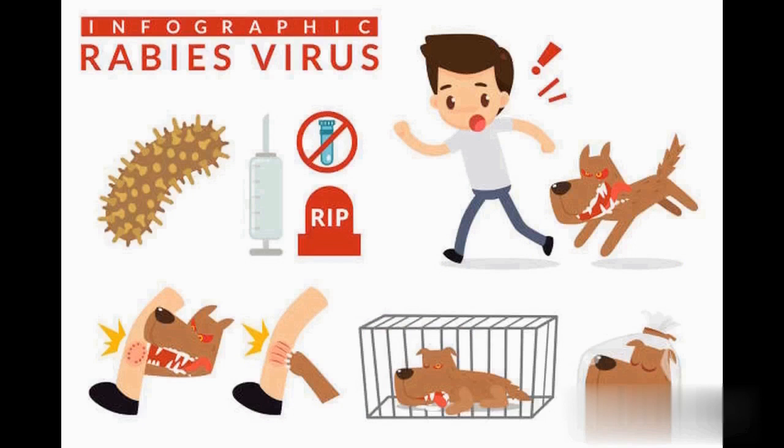After several hours to days, agitation becomes episodic and interspersed with calm, cooperative, lucid periods. These curious episodes last less than 5 minutes. Episodes may be triggered by visual, auditory, or tactile stimuli, or may be spontaneous. Seizures may occur. This phase may end in cardiorespiratory arrest or may progress to paralysis.